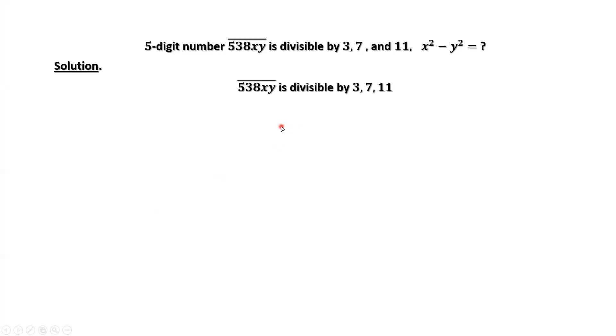From the given condition, this number is divisible by 3, 7, and 11. Those three numbers are prime numbers. This implies this number is also divisible by the product of the three numbers, which is 231.